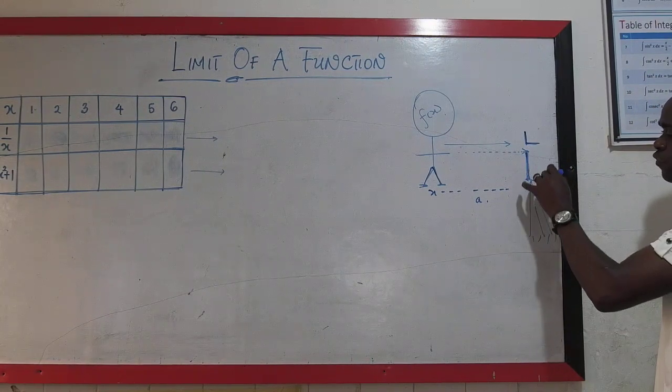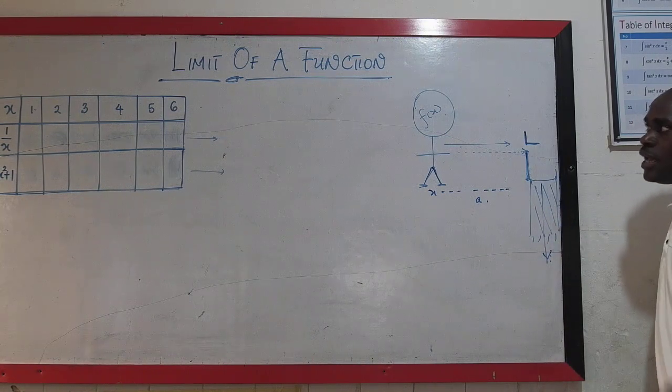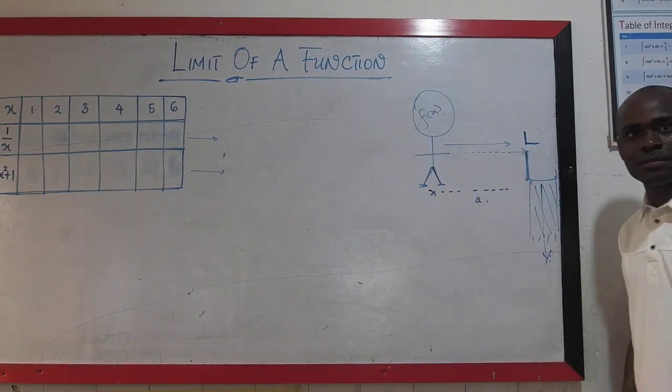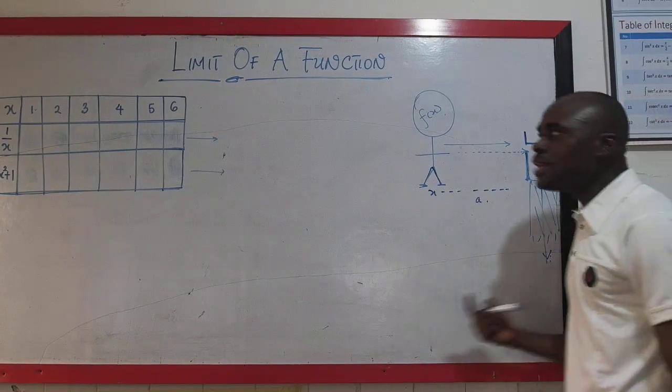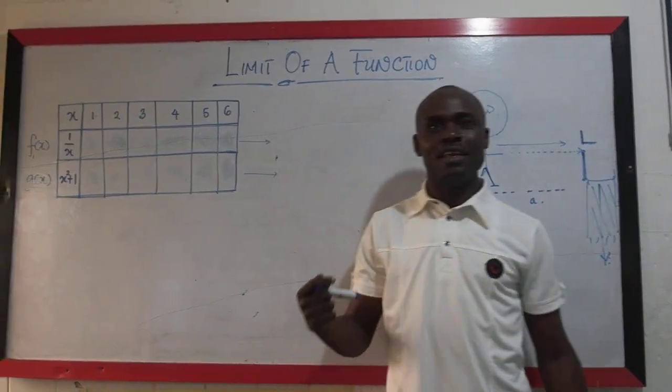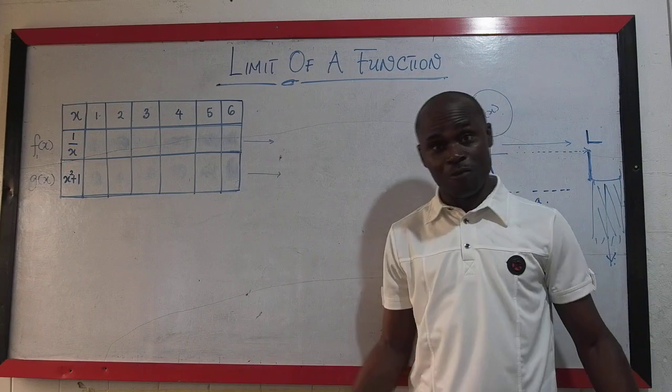What we are trying to say in mathematics is that this man must not exceed this position. If he exceeds this position, he is going to fall down into this pit. And let's call this man f of x. Now, this is an analogy. Let us look at the analogy in a graphical or probably a tabular form.